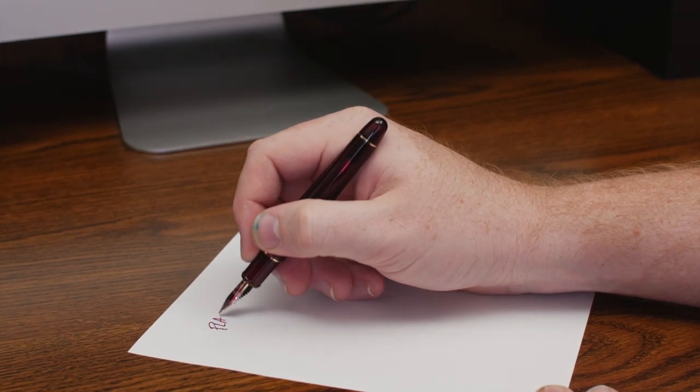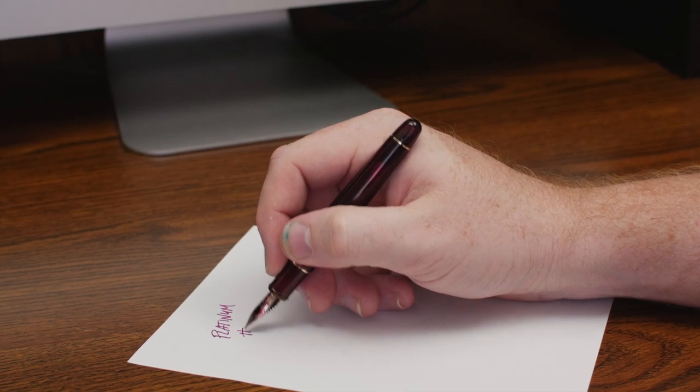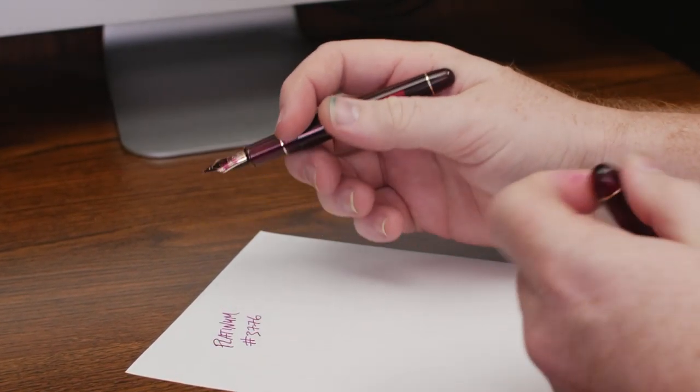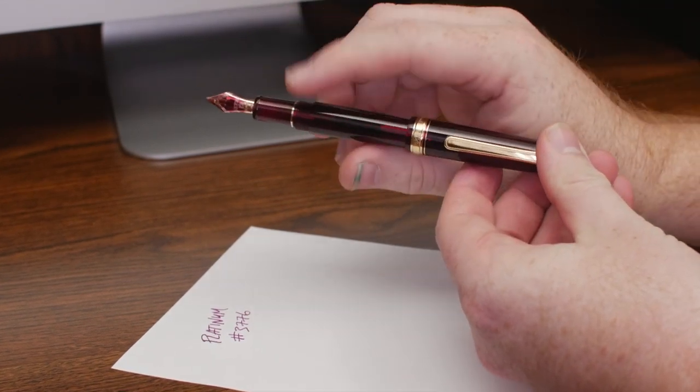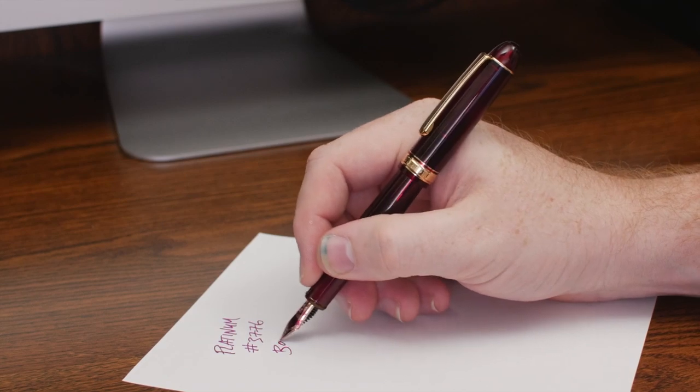When not posted, however, I find it too small. For a quick note, it's just fine, but anything longer than that and I have to post it. The cap sits on the barrel very securely. At a hair over 25 grams, the Century is light enough to stave off fatigue during those longer sessions.